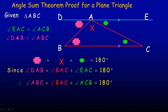The DAB angle equals the ABC angle, so I can substitute ABC in place of DAB. The EAC angle equals the ACB angle, so I substitute ACB in place of EAC. After substitution, we have angle ABC plus angle BAC plus angle ACB — those are the three interior angles of the triangle — and they add up to 180 degrees. That's a proof that the three interior angles in any plane triangle always add up to 180 degrees.